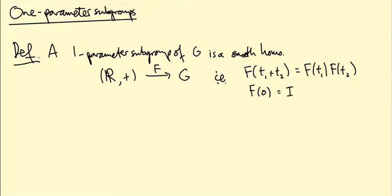And we also want F(0) is the identity matrix. So it's called a one-parameter subgroup because it's got one parameter, which is this real number, and the image of this homomorphism is a subgroup.